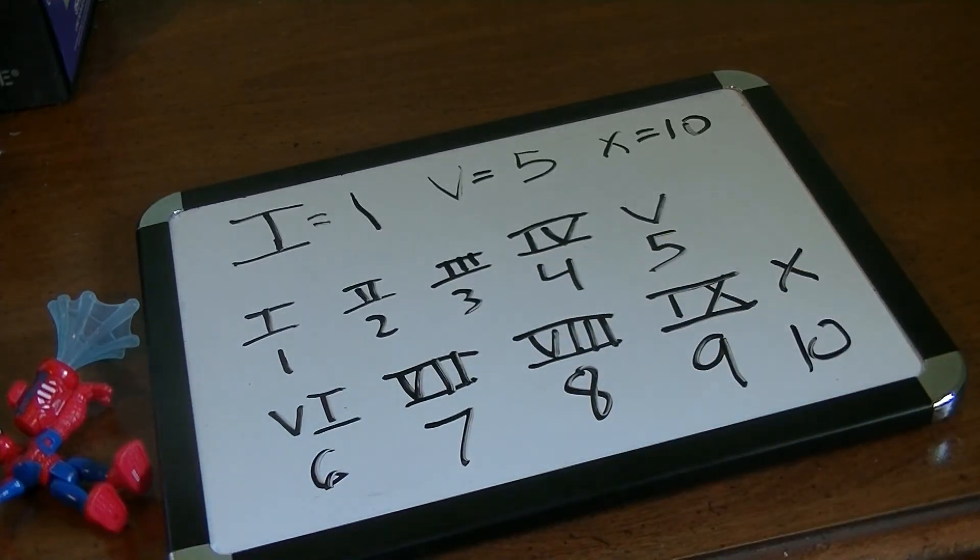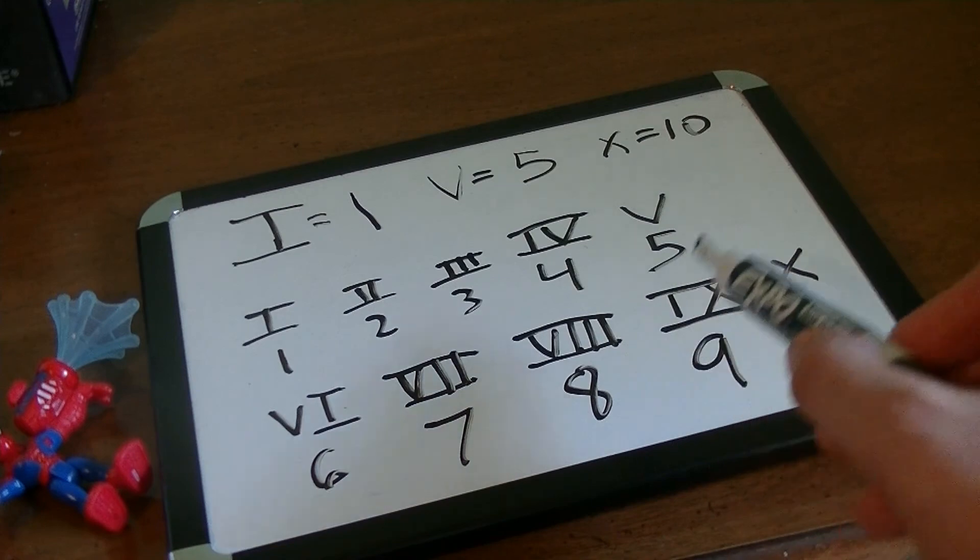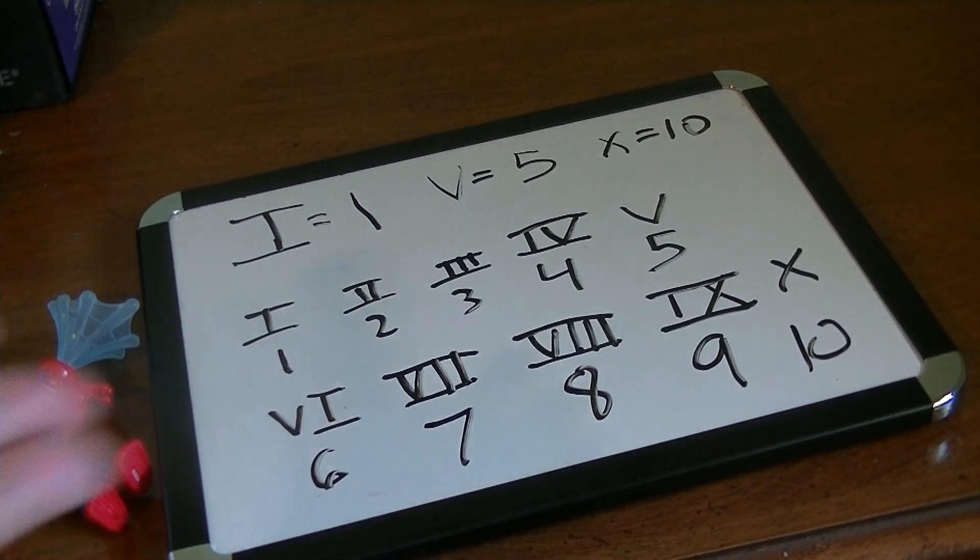So here's our basic 1 through 10 Roman numerals. In another video I'm going to do more Roman numerals and get into the more complicated numbers, but this is just the basics. 1, 2, 3, 4, 5, 6, 7, 8, 9, 10. Bye guys!